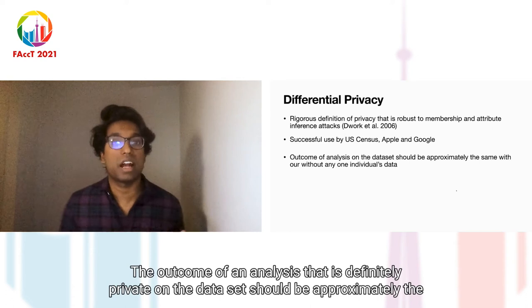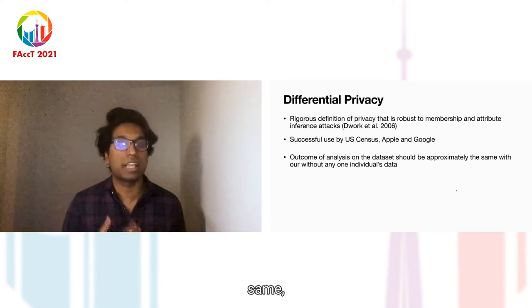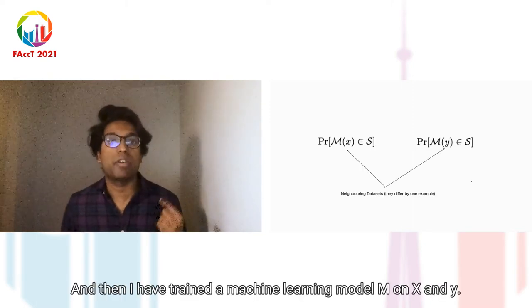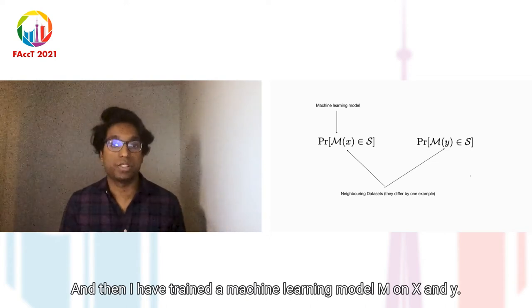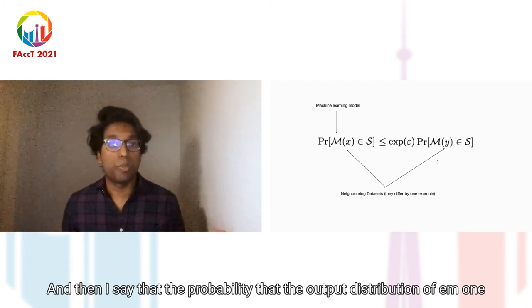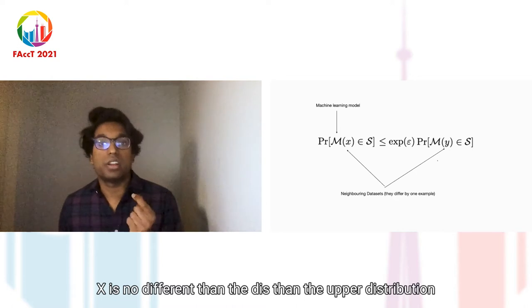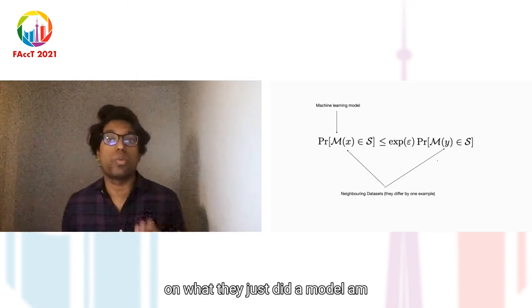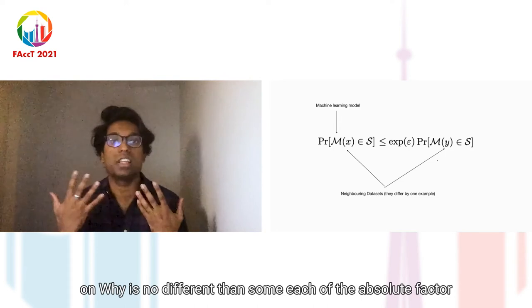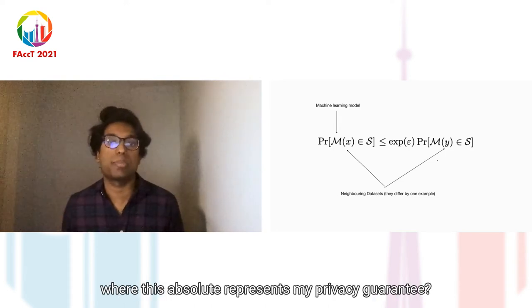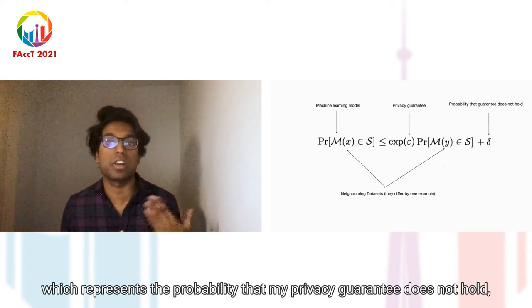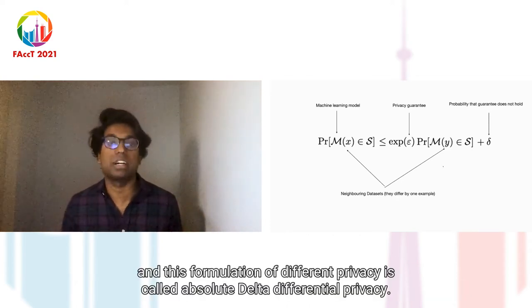In words, the outcome of an analysis that is differentially private on a dataset should be approximately the same with or without any one individual's data. Formally, let's say we have neighboring datasets X and Y, meaning they differ by one example. We train a machine learning model M on X and Y, and we say the probability that the output distribution of M on X is no different than the output distribution of M on Y is bounded by a factor of e^epsilon, where epsilon represents the privacy guarantee. We also have a delta factor, which represents the probability that the privacy guarantee does not hold. This formulation is called epsilon-delta differential privacy.